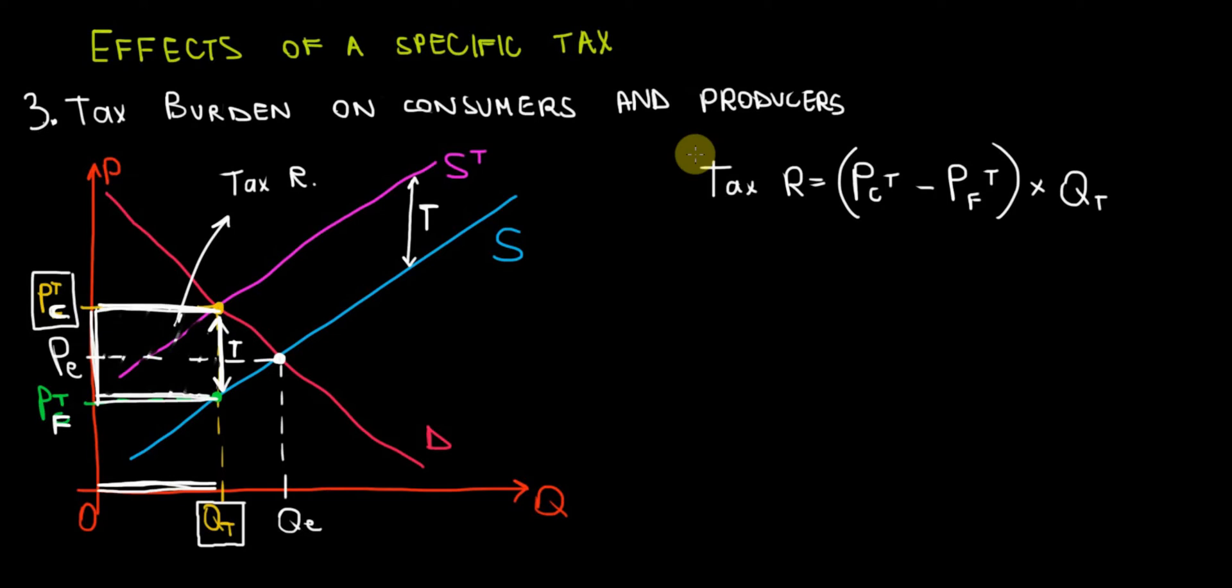Now this should be a familiar graph from the previous video. It's basically a regular shift of the supply curve by the amount of the tax. We already discussed in the previous video that the tax revenue is going to be the amount of tax, which is the difference between the price customers pay and the price that the firms keep, multiplied by the quantity that's being taxed on the market. Now, out of this tax revenue, we want to see how much is a burden to consumers first.